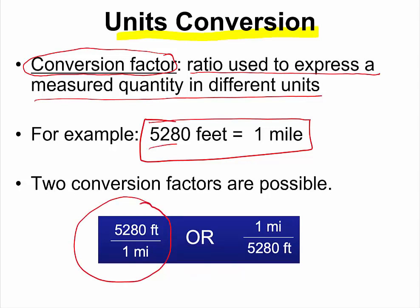Where the 5280 feet is the numerator and the one mile is the denominator. Or you can write it the other way around. Where the one mile is now the numerator and the 5280 feet is now the denominator. Any relationship can be expressed like this, and it makes converting from one unit to another a breeze.